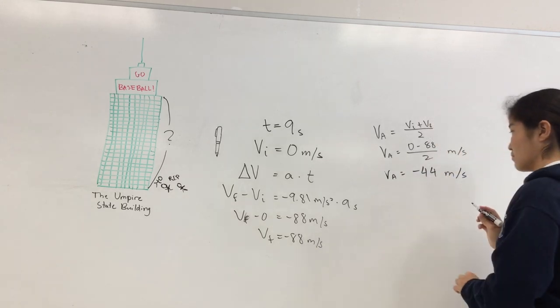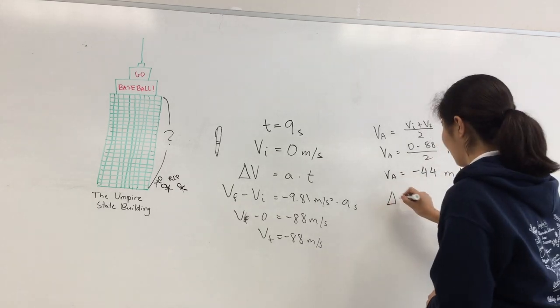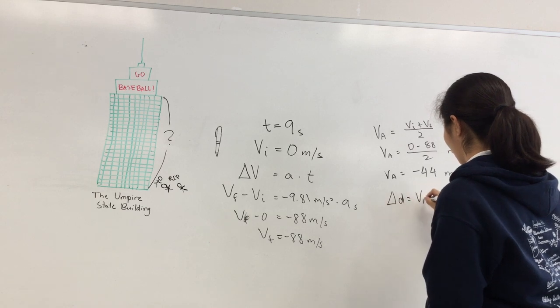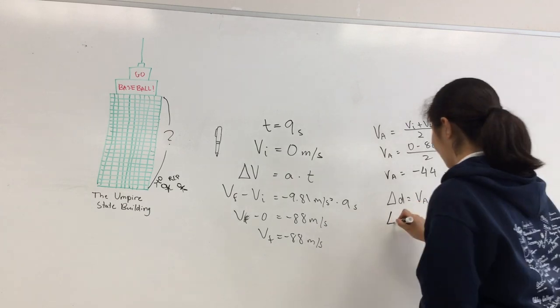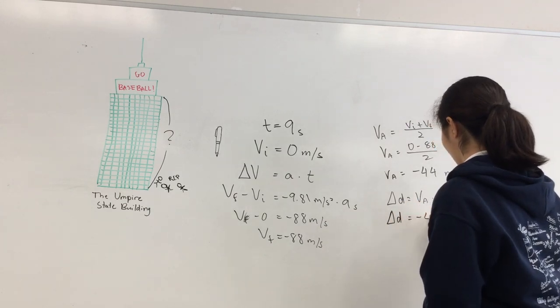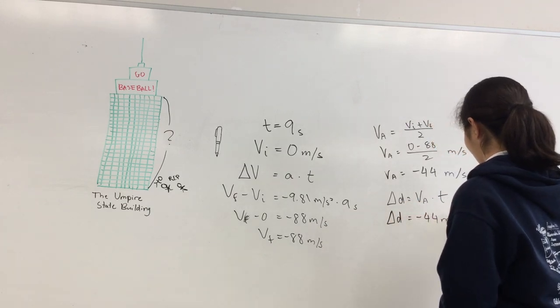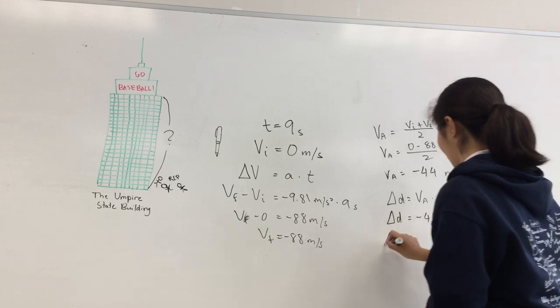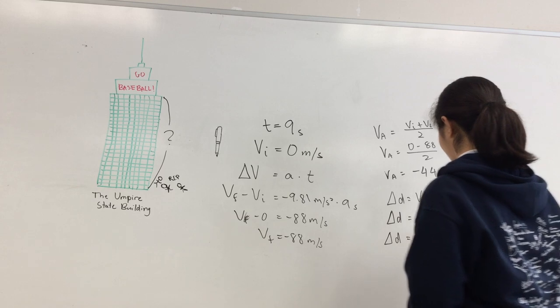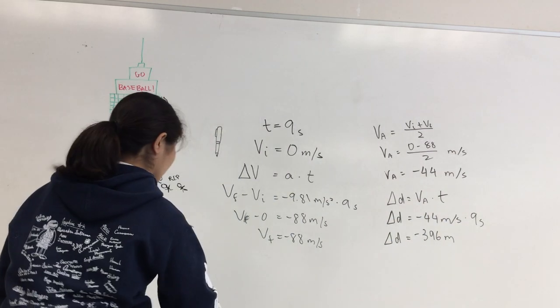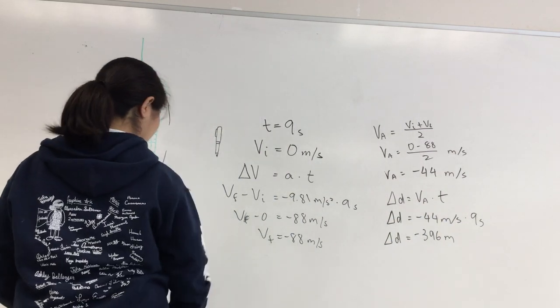Since the change in distance is the average velocity times the time, we can find out the height of the Empire State Building by multiplying negative 44 meters per second and 9 seconds, which equals negative 396 meters. That is the change in distance from the Empire State Building Observatory to the ground.